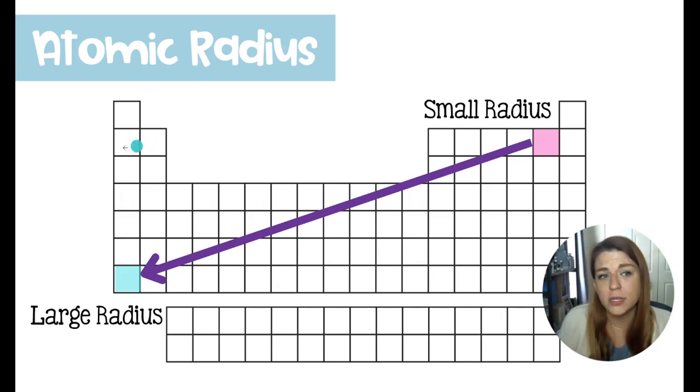Atomic radius is weird because as you go across a period from left to right, your atom actually gets smaller. I know that's really weird and doesn't quite make sense, but I pinky promise I will explain it to you in the next video where we talk about nuclear charge and shielding, because this periodic table trend is a little counterintuitive.